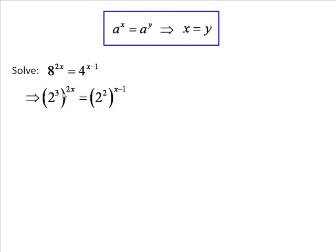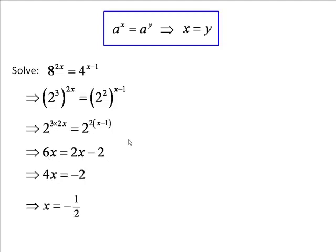Then we use the rule for multiplying powers of powers. 2 to the power of 3 times 2x, 2 to the power of 2 times x minus 1. Now, those two must be equal to each other. On the left it's 6x and on the right it's 2x minus 2. So, we've simplified it because we had the same base number on both sides. Now we solve it quite easily. 4x is minus 2. x is minus 1 half.